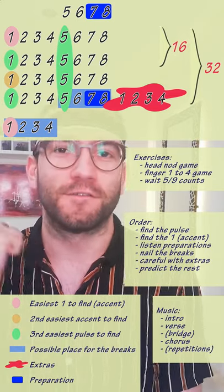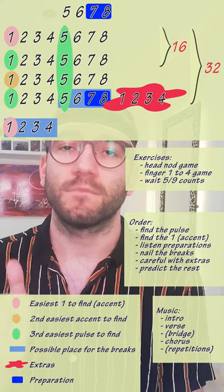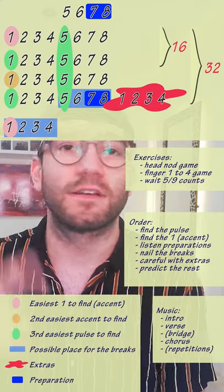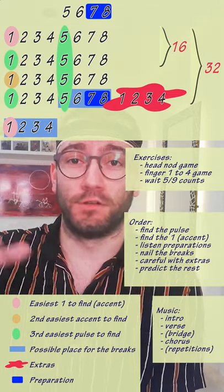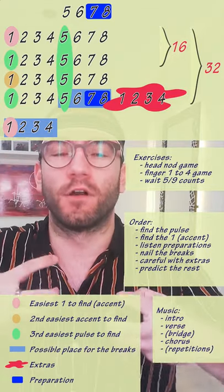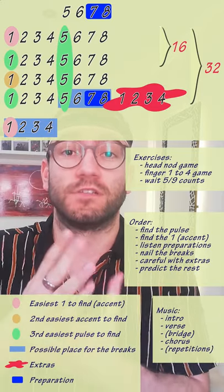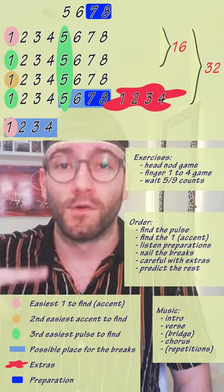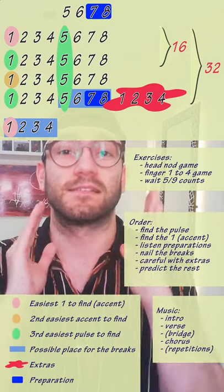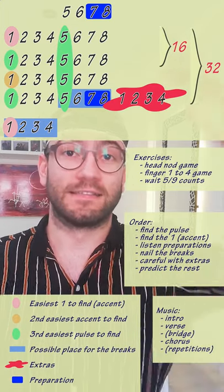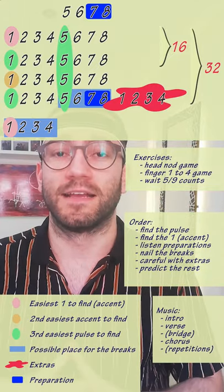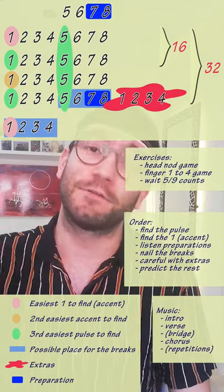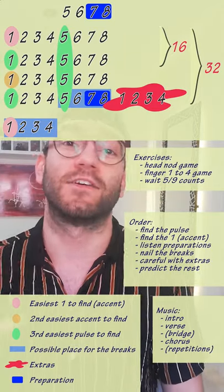To summarize: find the rhythm — your head and body do it naturally. Find the one — that strong accent within the pulses. Count five tempos to make sure you're not on the five instead of the one. Then use the 16/32 rule to find where the break is. And don't stop counting just because you got it right the first time, because in Bachata, those extra tempos can throw you off anywhere, anytime. Keep counting and stay ready.